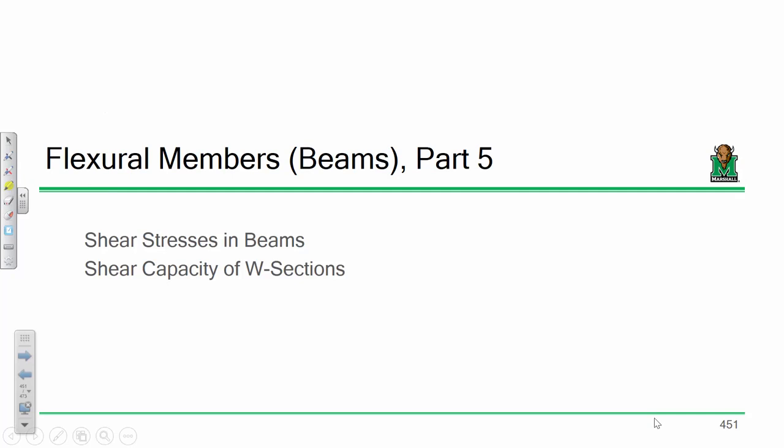Now, look. Here's my opinion on shear. Up until now, it's really been an afterthought with a lot of stuff that we've been doing. Like we've been focusing primarily on phi M_N being greater than or equal to M_U. And then we said, let's focus all our energy on that. Oh, crap. Forgot. We've got to check this. And it's been an afterthought because in building design, 99 times out of 100, it is an afterthought.